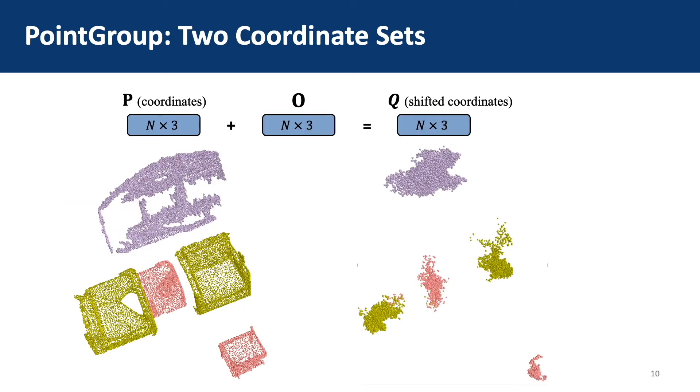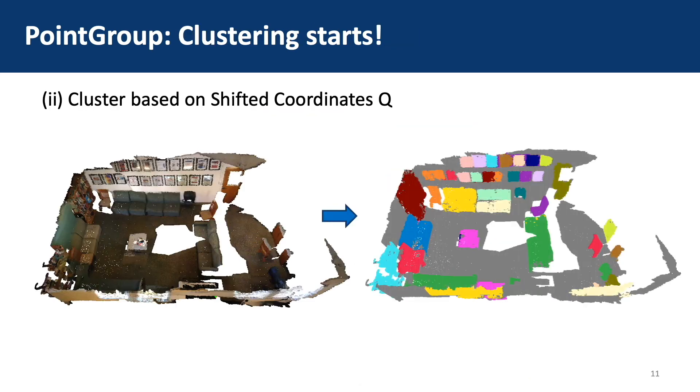However, remember that we have predicted an offset to instance center for each point. Thus, we can add the offsets to the original coordinates P to get the shifted coordinates Q. Nearby objects with the shifted coordinates will have larger void space between them, and clustering based on the shifted coordinates Q can to an extent resolve the problem that happened on original coordinates.